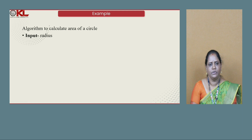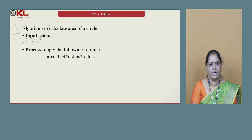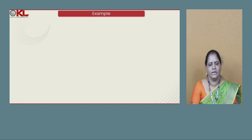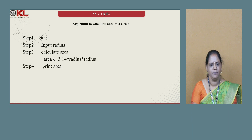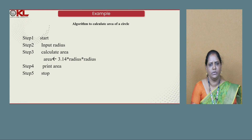The input for this problem is the radius of a circle. We do some calculation in the process part, using a formula to calculate the area of a circle, and as output we display the calculated area. The algorithm steps are: Step 1 — Start. Step 2 — Input radius. Step 3 — Calculate the area using the formula. Step 4 — Print the area. Step 5 — Stop. Each algorithm starts with a Start step and ends with a Stop step. This step-wise procedure is called an algorithm.